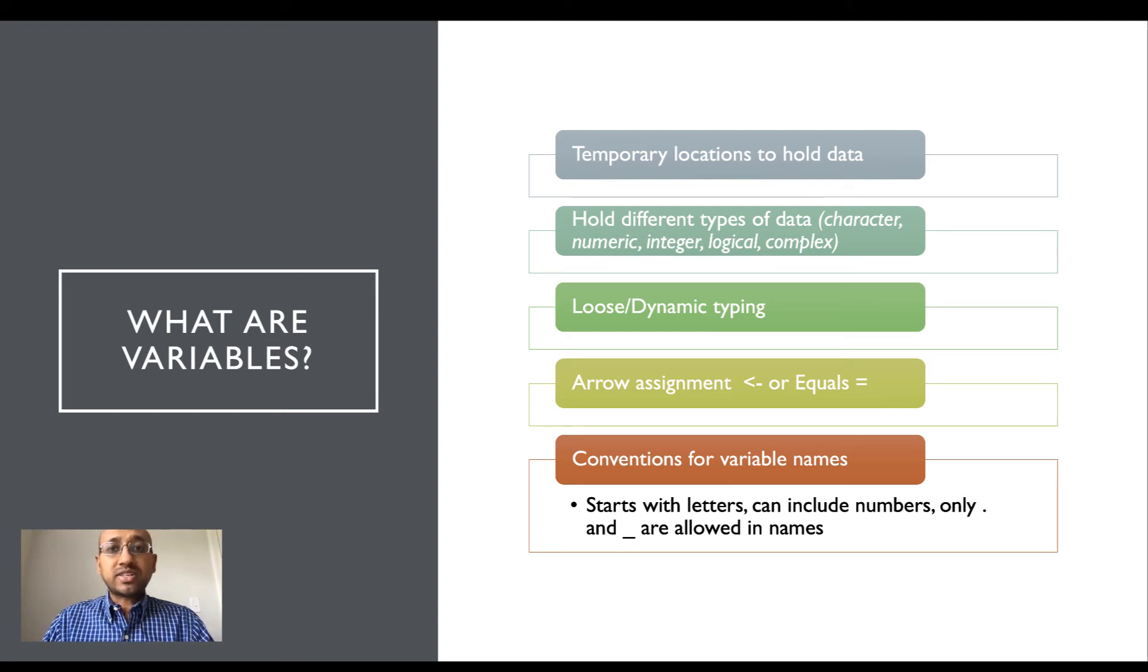Loose or dynamic typing refers to the fact that a programming language can change the data type that a variable holds on the fly. Some programming languages do support loose and dynamic typing, specifically R. Other programming languages may not support loose or dynamic typing.